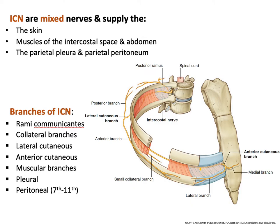The intercostal nerves are mixed nerves — they are both sensory and motor. They carry sensations from the skin of the thorax, abdomen, and lateral wall of the thorax, and they innervate the intercostal muscles and the muscles of the anterior abdominal wall. They also innervate the parietal pleura in the thorax and the parietal peritoneum.